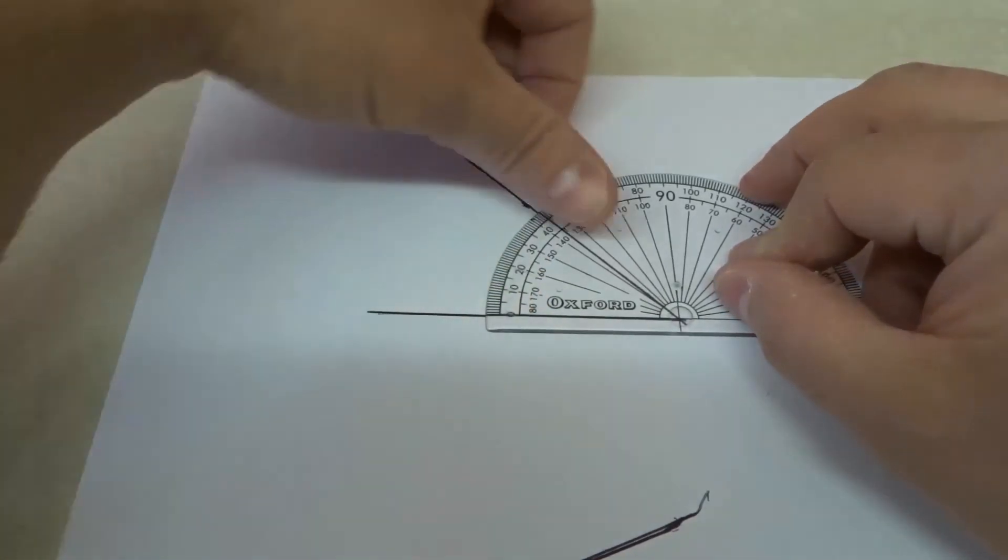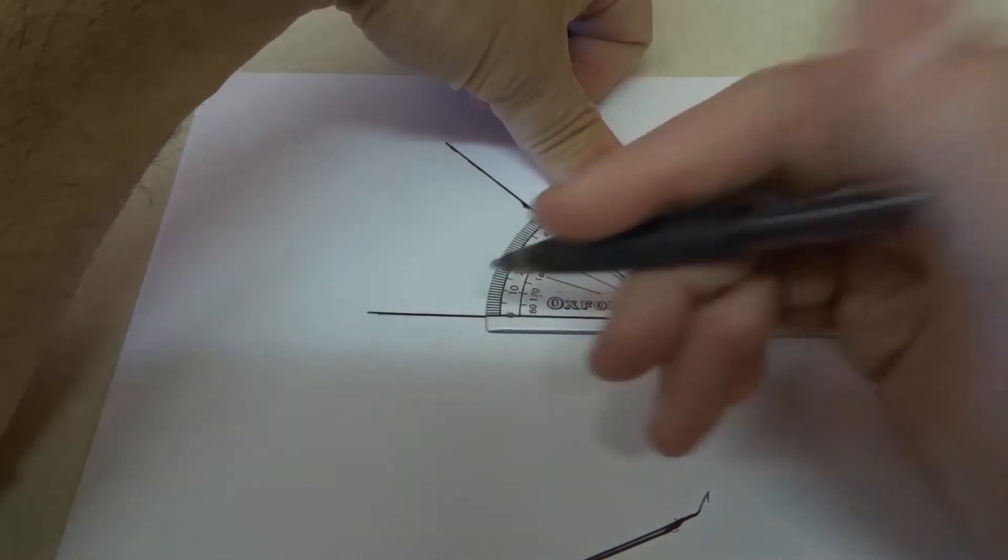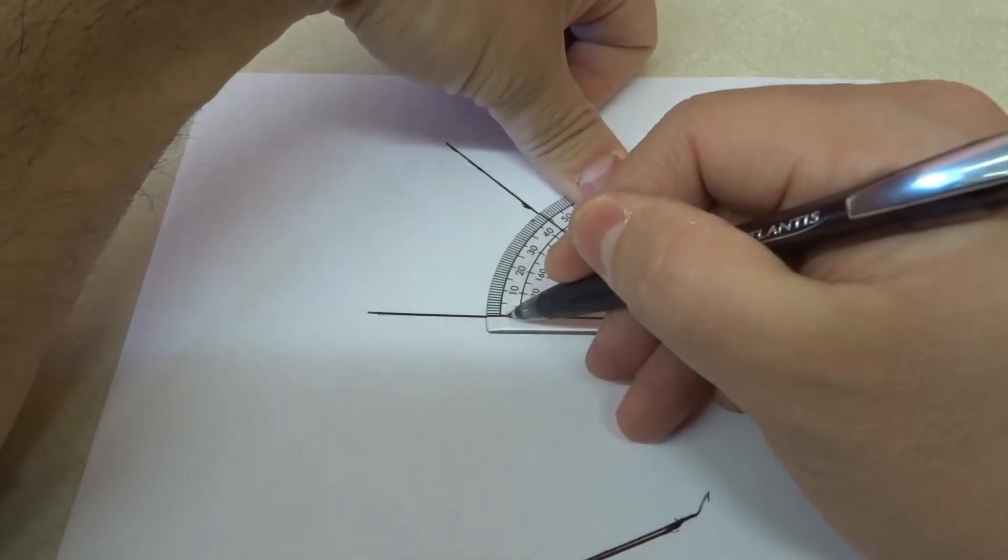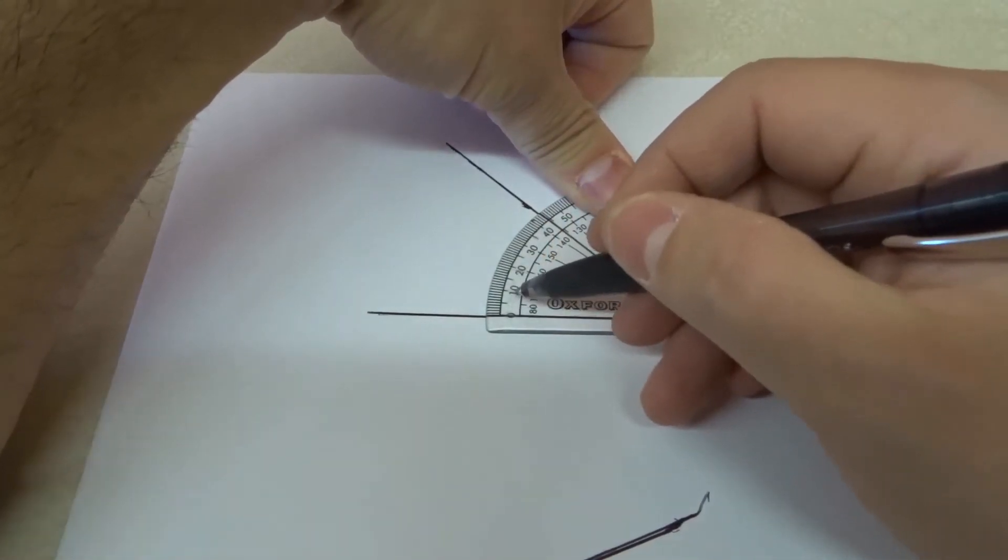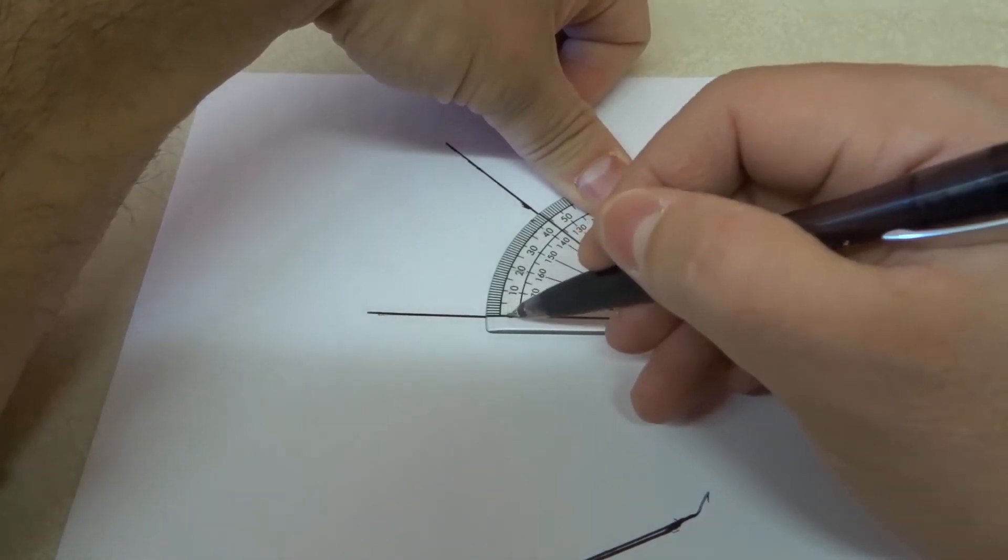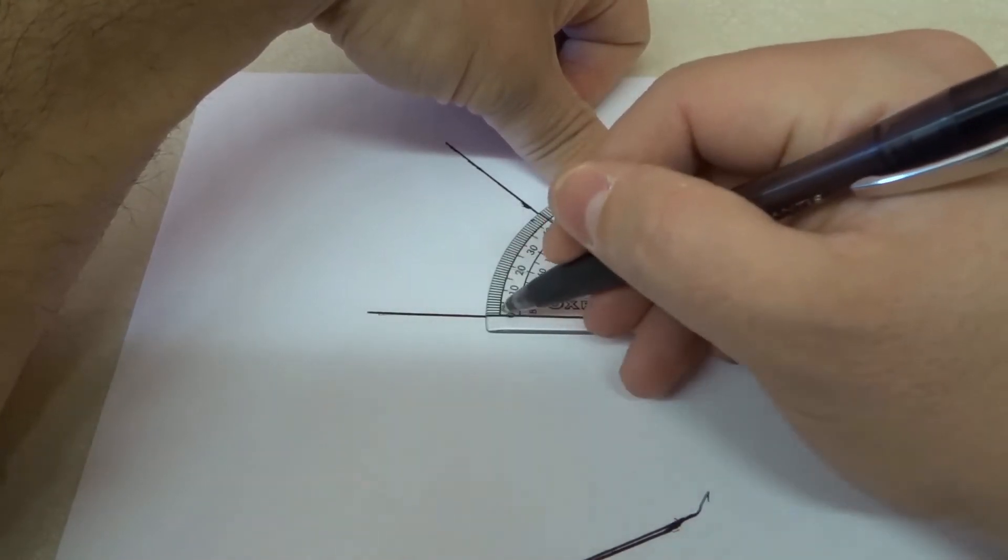And now we're going to look at where this angle falls. Now for this one, we're going to start at the bottom and the zero at the bottom of this angle. Just give me a minute. The zero at the bottom of this angle is actually going to be on the outer set of numbers.